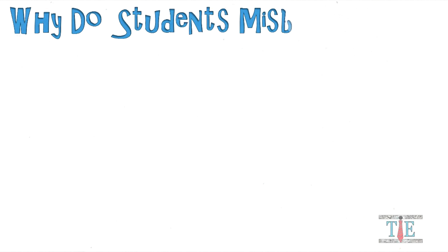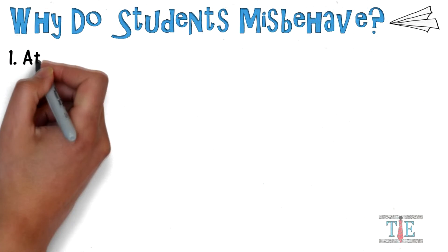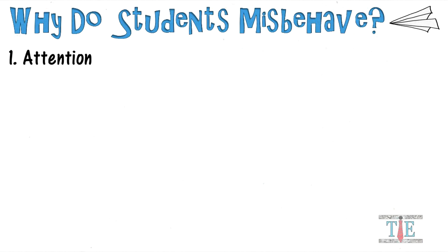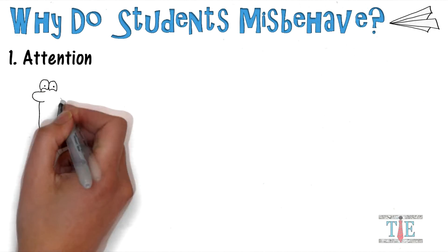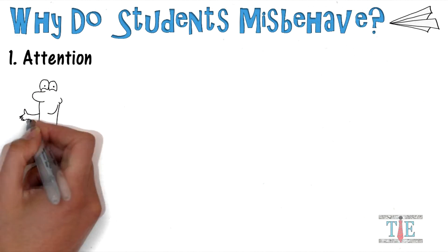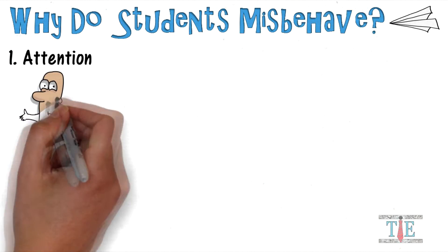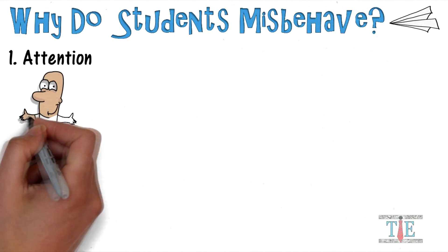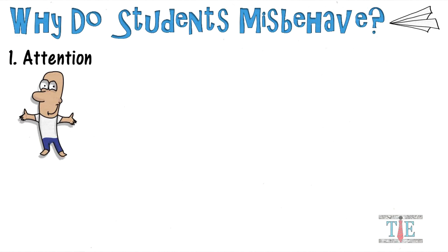Hello and welcome to Teachings in Education. What are some of the many reasons that students misbehave? One reason that is very obvious is for attention. Some students act out in a way to get a quick laugh from their peers. When they act out, the teacher rewards them with attention. Any type of response from the teacher is a form of attention.